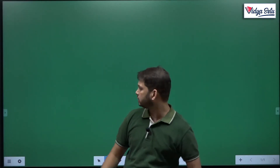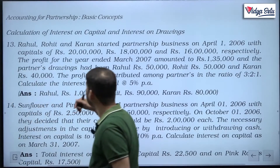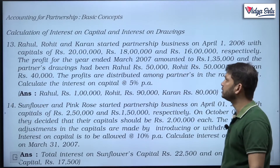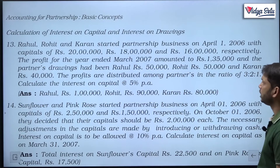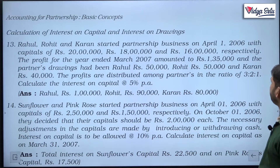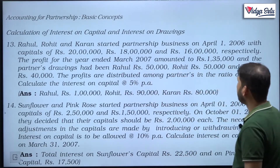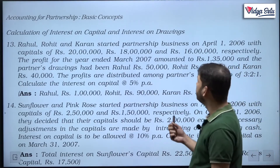Hello everyone, today we are starting with our next question, let us see what it is. Question number 13 of our NCERT chapter 2 partnership basic concept: Rahul, Rohit and Karan started a partnership business on 1st April 2006 with capitals of rupees 20 lakh, 18 lakh and 16 lakh. This is the starting money.